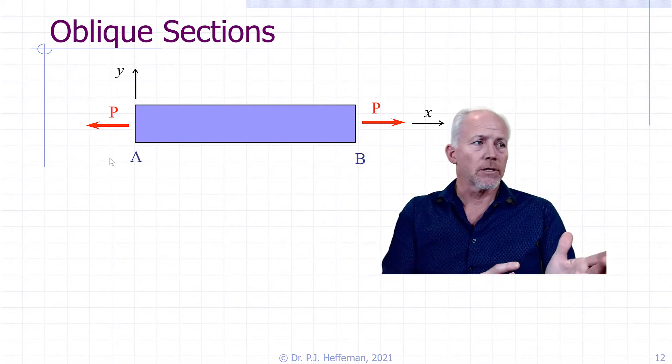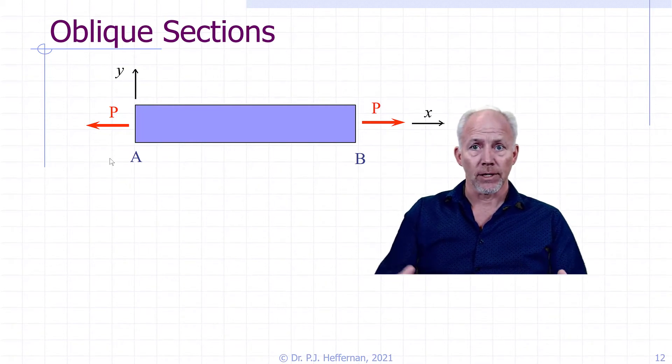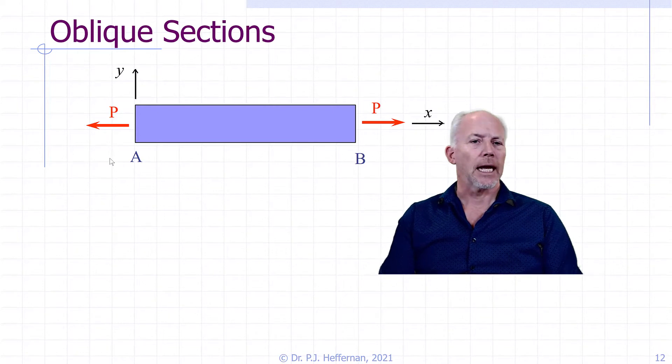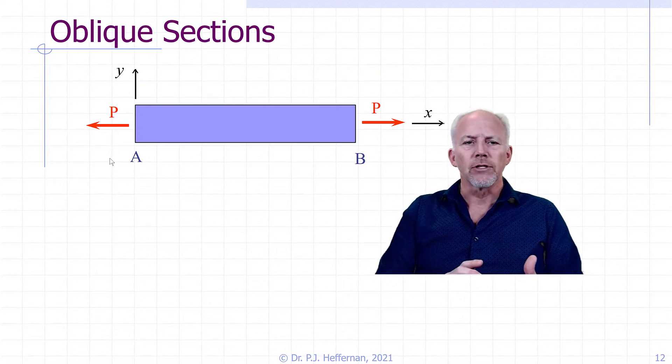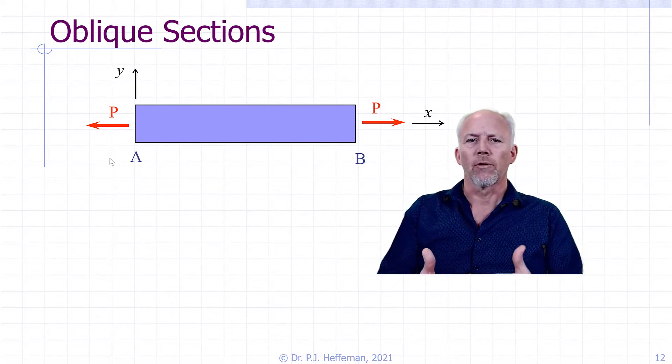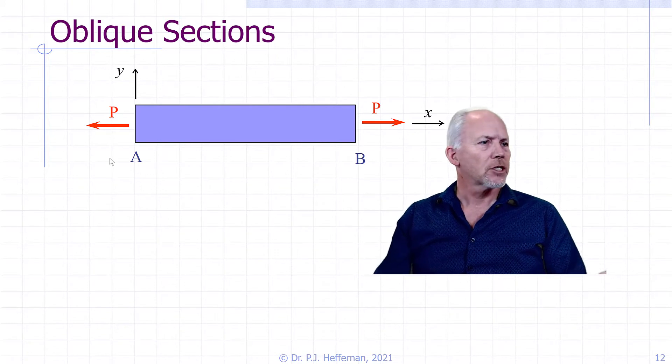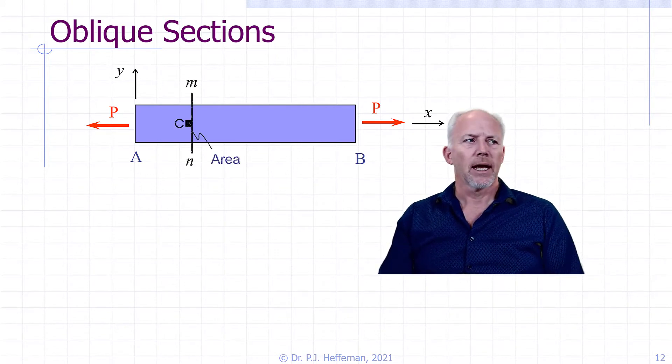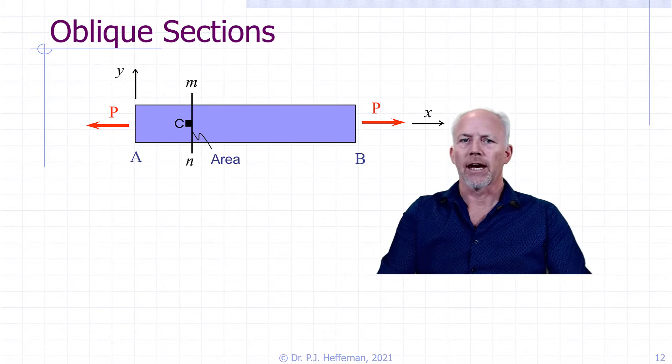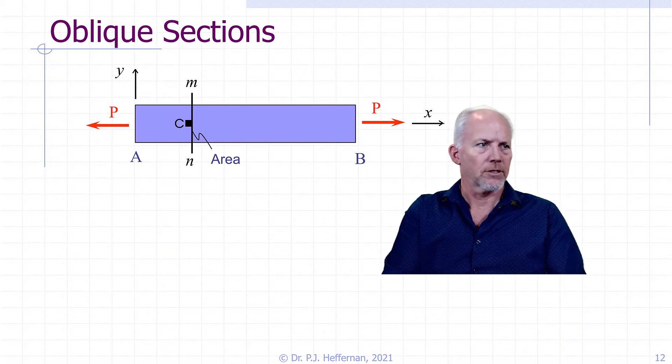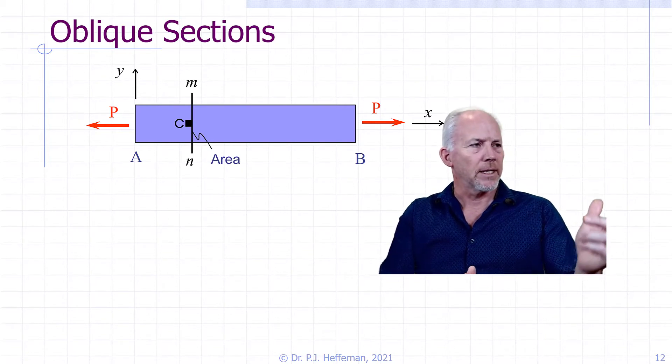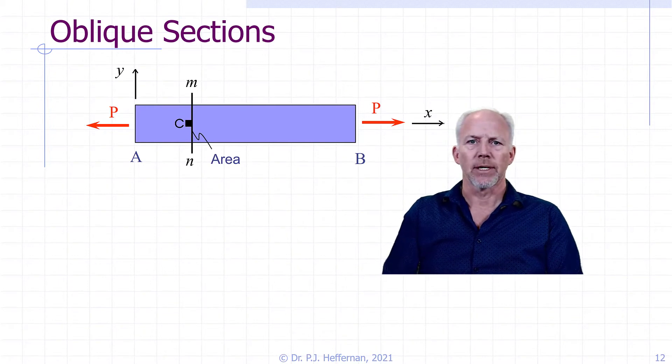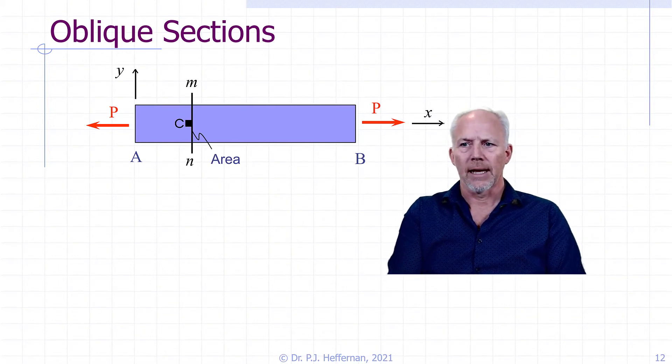So what we're going to do is take our uniaxially loaded bar shown on this slide and we're going to start to change or move the orientation. It's loaded with p here, and of course the orientation and the area that we've been looking at for normal stresses associated with this would be the point C shown up here on the plane MN.